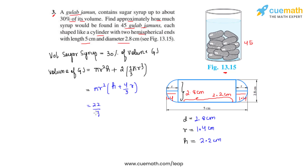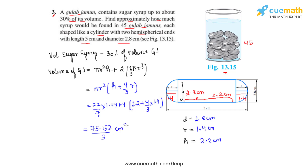Substituting the values — 22/7 × 1.4 × 1.4 — with h equals 2.2 centimeters and r equals 1.4 centimeters — the calculation gives us 75.152 divided by 3 cm³ as the volume of one gulab jamun.